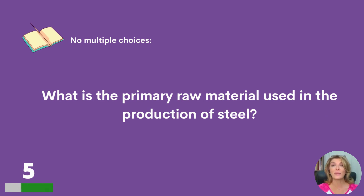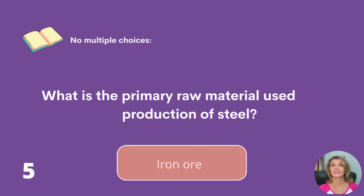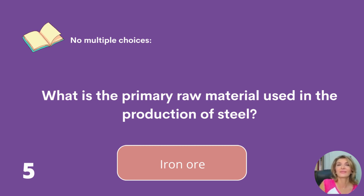What is the primary raw material used in the production of steel? Iron ore.